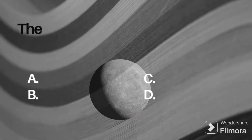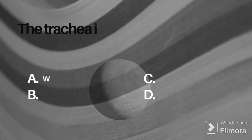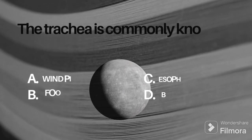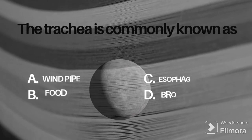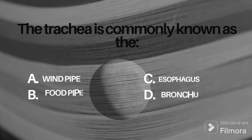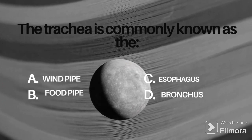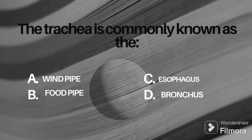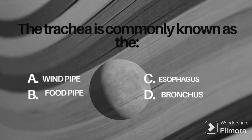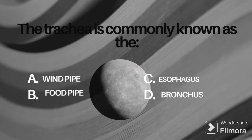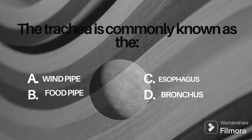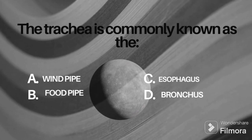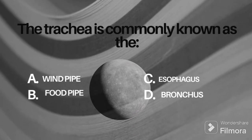Question number 5: the trachea is commonly known as? Option A: windpipe, B: foodpipe, C: esophagus, D: bronchus. Give your right answer in the comment box.